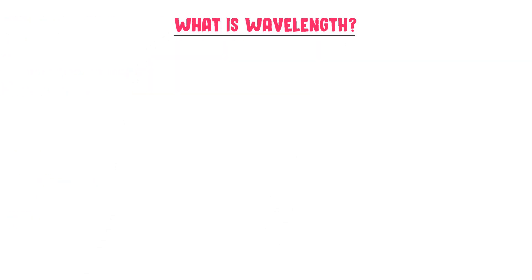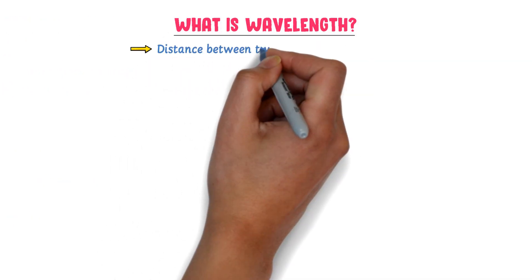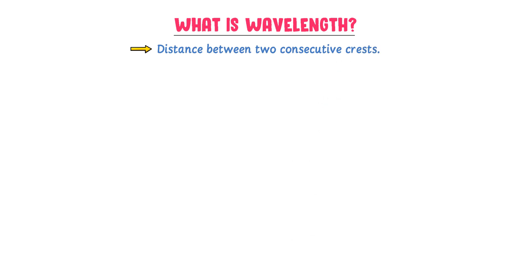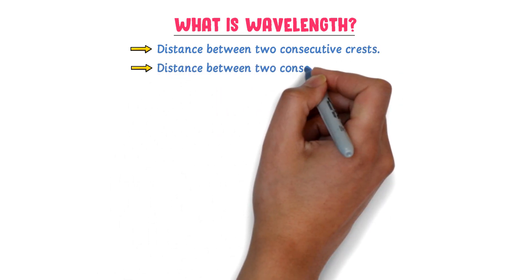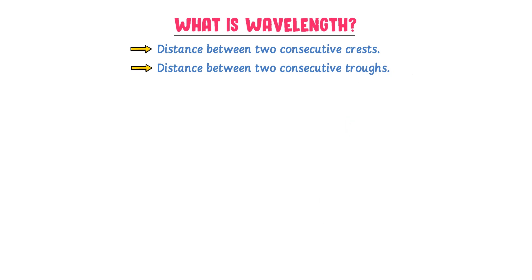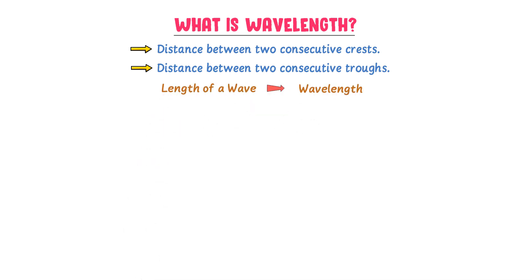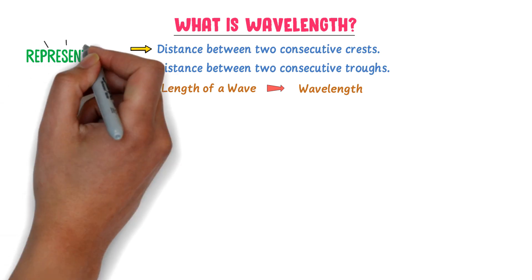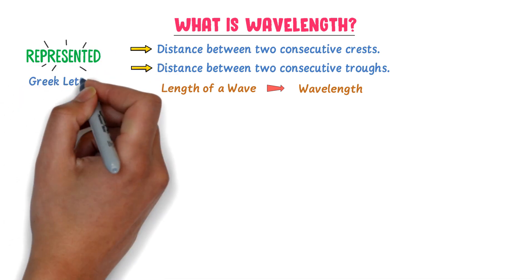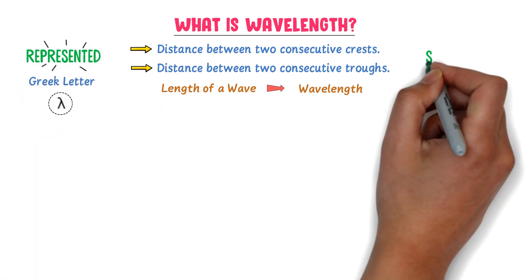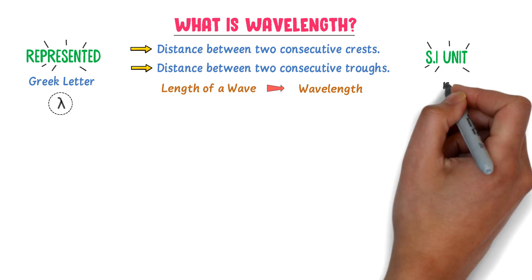Now let me teach you what is a wavelength. The distance between two consecutive crusts is called wavelength, or the distance between two consecutive troughs is called wavelength. Simply put, the length of a wave is called wavelength. Wavelength is represented by the Greek letter lambda, and its SI unit is meter.